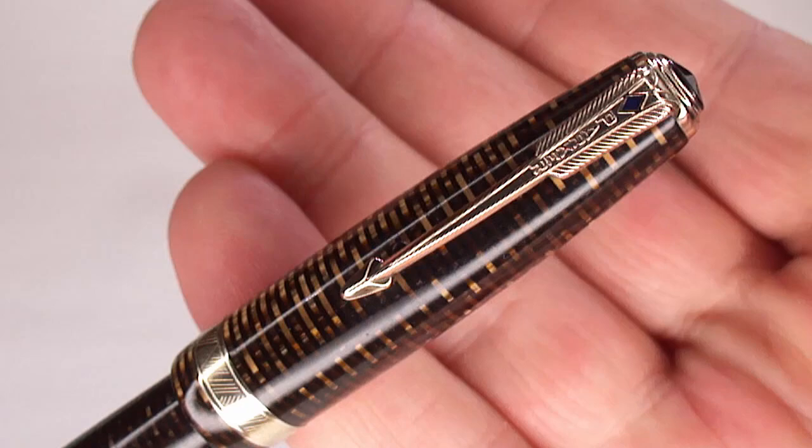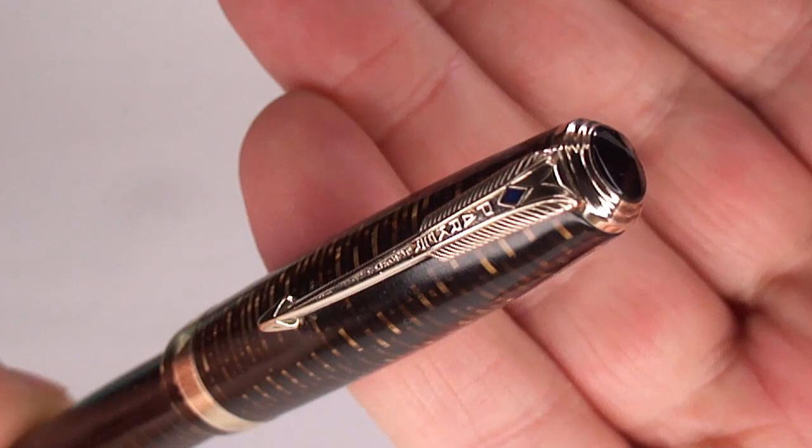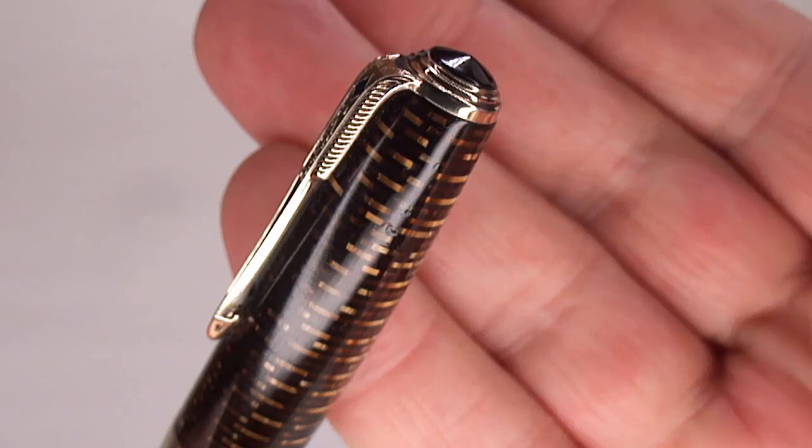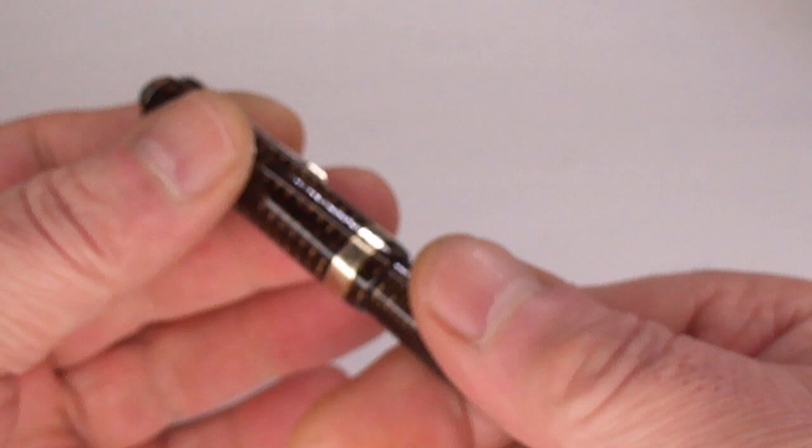Then we've got the very recognizable Parker clip, the earlier type version. You can see it's got Parker written down the center of the clip, and to the very top we've got the blue diamond. It's what we term the blue diamond clip. To the very top we've got this slightly peaked black jewel, but all in all an absolutely stunning pen.